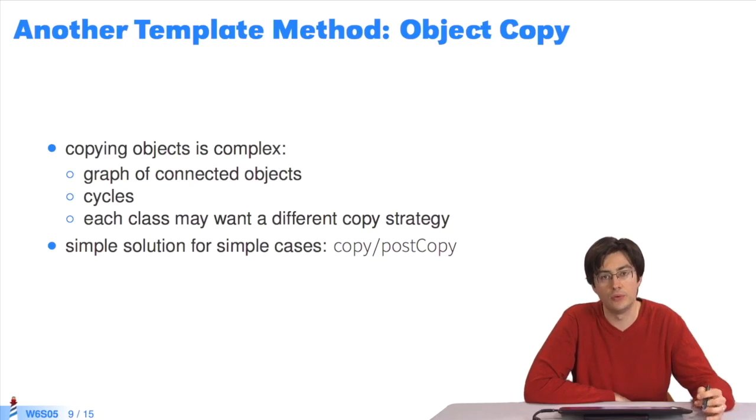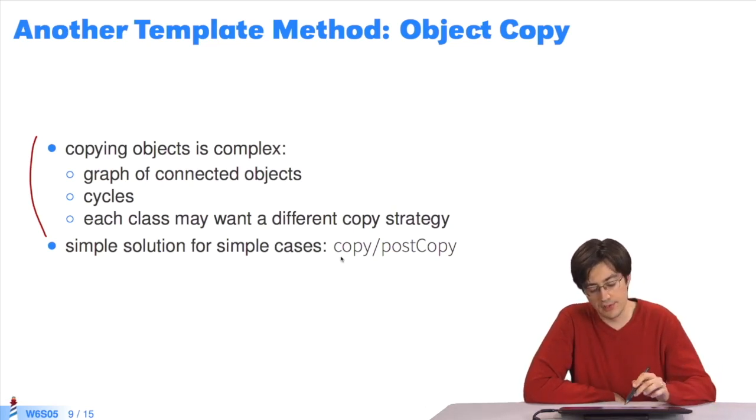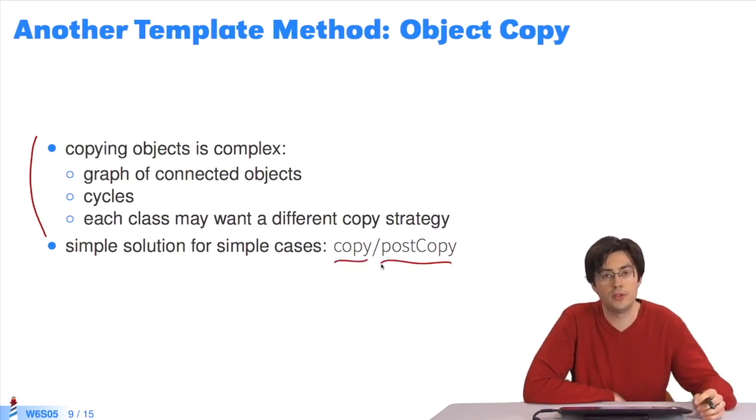Now we'll look at another example, which is object copy. What does copy do? It enables you to take an object and create a copy from it. Copying objects is complex. There can be different strategies. Each class can decide what the copy of its instances should look like. There is a simple template method solution that uses copy and postCopy.